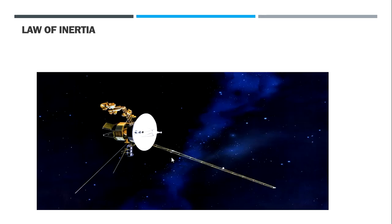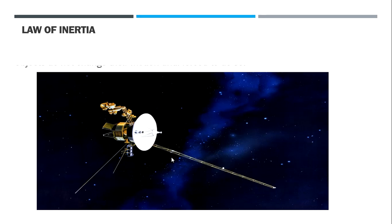Newton's first law is also called the law of inertia. Inertia describes objects that do not change their motion unless forced to do so. If there were no friction and no drag, an object in motion would stay in motion and could travel forever in a straight line — such as satellites and planets do in space.